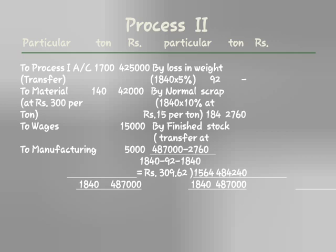Loss in weight in Process 2: 5% of 1,700 units is 85 units. Normal scrap at 15 per unit. Transfer to finished stock: 1,564 units at Rs. 4,84,240. This completes the process costing problem.